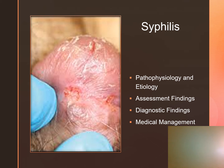We diagnose syphilis through microscopic examination of the chancre, a VDRL test, RPR, FTA-ABS test, or cerebrospinal fluid examination if indicated. We treat with antibiotic therapy, which may require a single dose of penicillin G IM if primary or secondary, or tetracycline or doxycycline. Follow-up examinations and lab tests should also be done to confirm the client has effectively eradicated the disease.